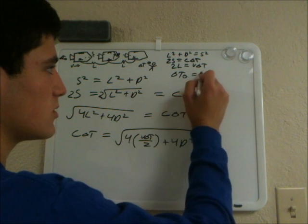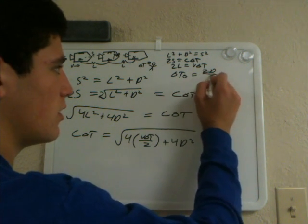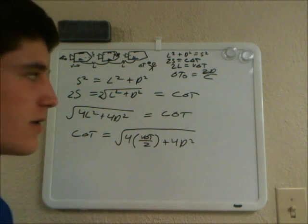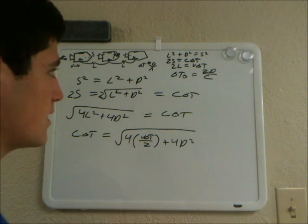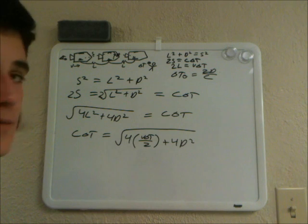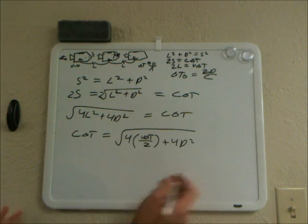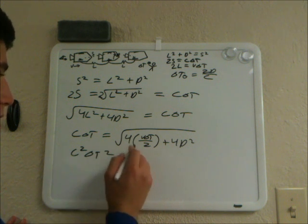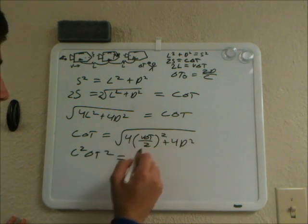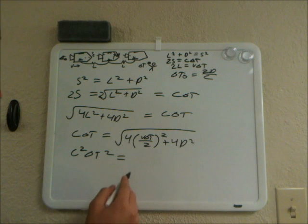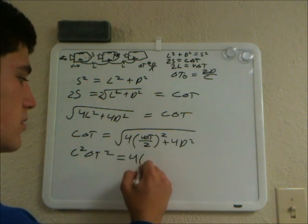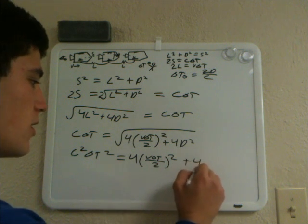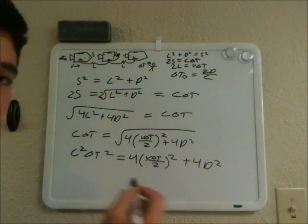We also need the equation delta T naught equals 2D over C. We'll get to that in a minute. Now squaring both sides, we get C squared delta T squared equals 4 times (V delta T over 2) squared plus 4D squared.